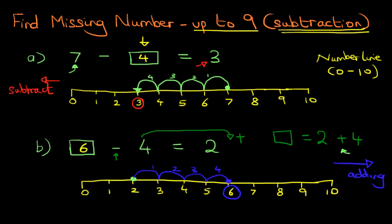So, there are two different examples. We're using the same number line, but it is used slightly differently depending on where the missing number is. Just make sure you follow these principles. That is how we find the missing number for numbers up to 9 with subtraction questions.